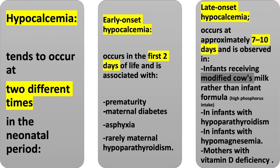Hypocalcemia tends to occur at two different times in the neonatal period. Early-onset hypocalcemia occurs in the first two days of life and is associated with prematurity, maternal diabetes, asphyxia, and rarely maternal hypoparathyroidism. Late-onset hypocalcemia occurs at approximately 7–10 days and is observed in infants receiving modified cow's milk rather than infant formula, those with high phosphorus intake, infants with hypoparathyroidism or hypomagnesemia, and mothers with vitamin D deficiency.